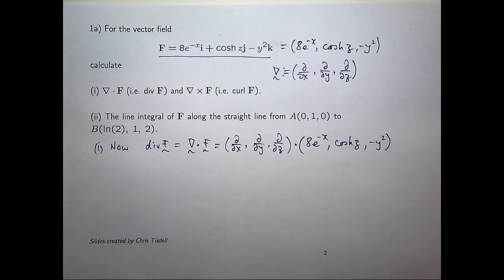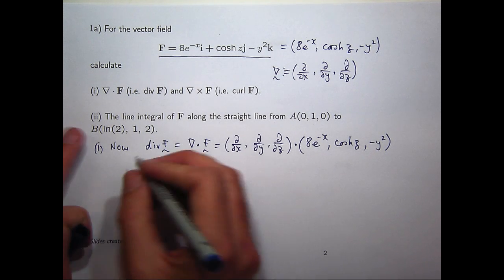Now remember, a dot product, essentially, it's the first component with the first component, the second component with the second component, the third component with the third component, and you add them all up. But because it's a special kind of symbolic vector involving a differential operator, these things are acting on the component functions. Not multiplying, acting. So if we were to expand this...